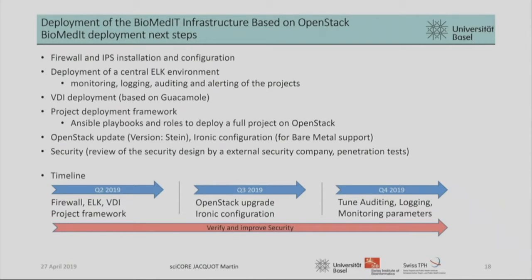We also plan — because we started in January and are a little behind — to update OpenStack to the latest version in September, to avoid having to do it when projects are arriving. We also had to patch the current version to enable bare-metal support, so we will upgrade first so we can install it without modification. And of course, why we made this — it's all about security, security, security. Once the whole setup is done, we want to review the security design with an external company and possibly make some penetration tests. Penetration tests have already been started by a SIB security expert who is evaluating whether we are secure, and we are now doing this together with CoreIT.